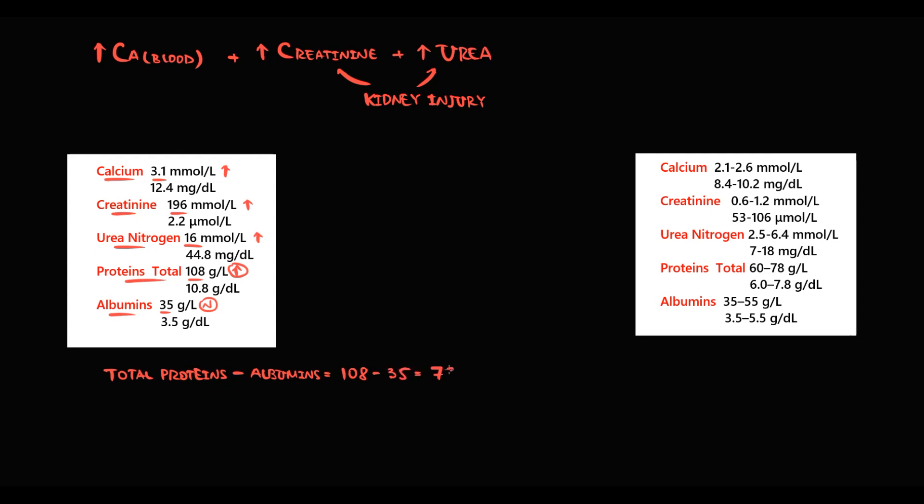In this case it's 73. In normal condition, the amount of other proteins is approximately 45. So we have a protein gap and the difference is huge. Now we know why ESR is elevated—simply because the concentration of proteins in the blood is huge. If we add to this anemia, we have more than enough to suspect multiple myeloma.